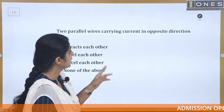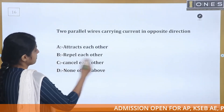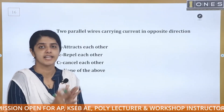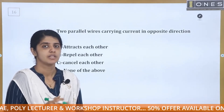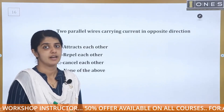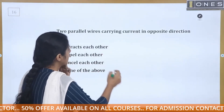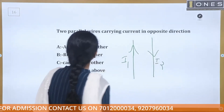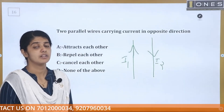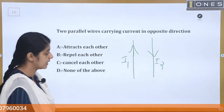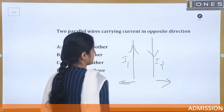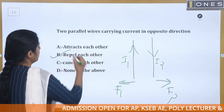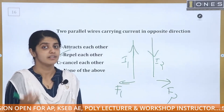Two parallel wires carrying current in opposite directions. The options are: attracts each other, repels each other, cancels each other, or none of the above. Force between two current carrying conductors: two parallel conductors carrying current in opposite directions — this is the repulsive force. If F1 is in one direction, F2 is also in that direction. Current carrying conductors carrying current in opposite directions will repel each other.